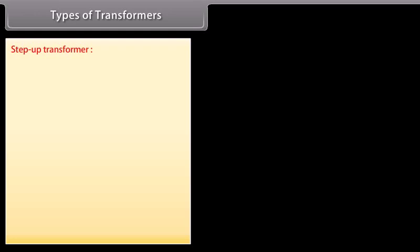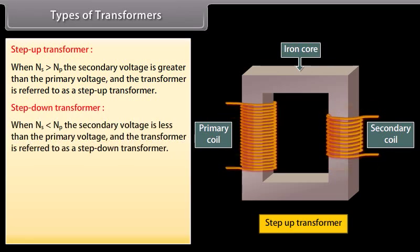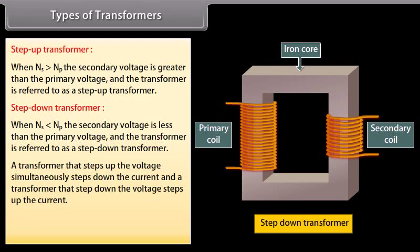Types of transformers: There are two types. Step-up transformer: when the secondary voltage is greater than the primary voltage. Step-down transformer: when the secondary voltage is less than the primary voltage. A transformer that steps up the voltage simultaneously steps down the current, and vice versa. IS/IP = VP/VS = NP/NS.